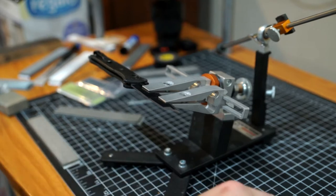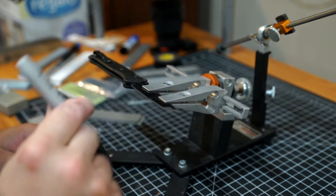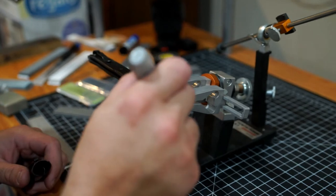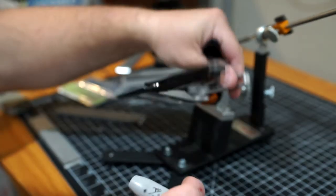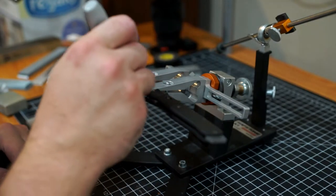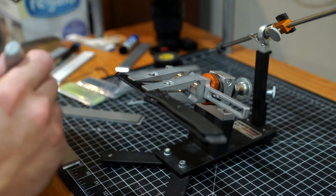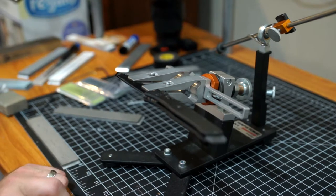So just marking the bevel with a Sharpie. Mark both sides. This is a pretty easy angle to find. They use a pretty standard angle.